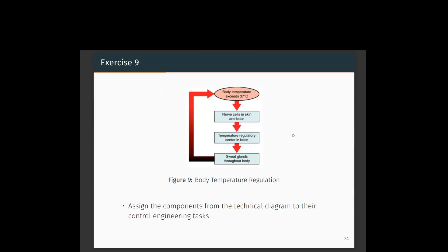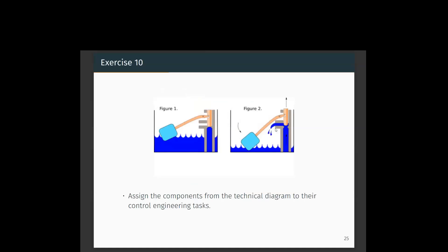Possible disturbances to this system include ambient temperature or food intake, which may raise body temperature. The thermoregulatory center in the brain — specifically the hypothalamus — is the controller. It gives signals to the sweat glands, the manipulated variable, to maintain body temperature at the desired set point of 37°C. The controlled variable is the temperature of the body.